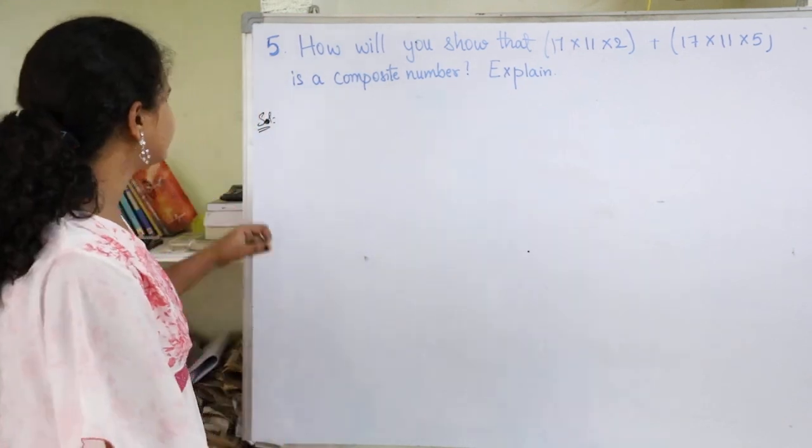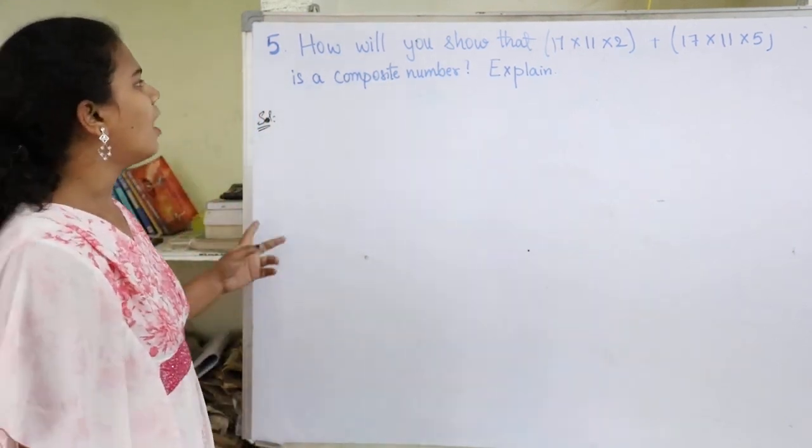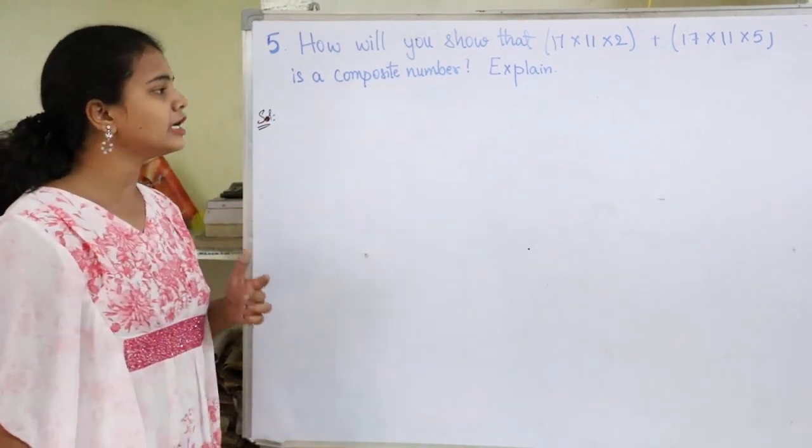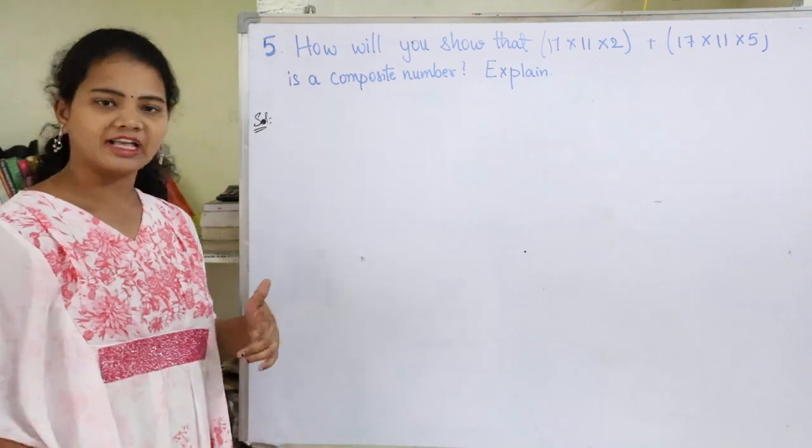Hey guys, I am Marks here and let's start with the 5th question. How will you show that 17 into 11 into 2 plus 17 into 11 into 5 is a composite number? Explain.